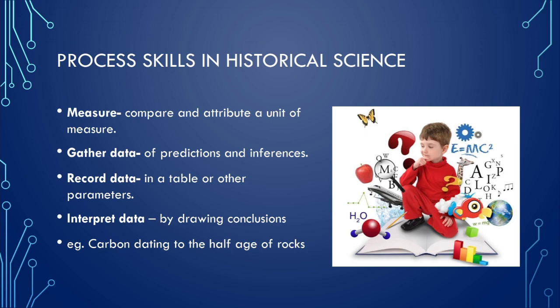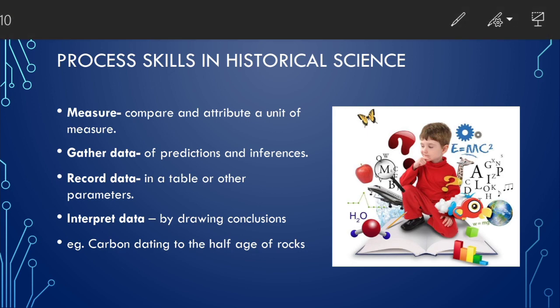Next set of skills used in historical science are measuring, gathering data, recording the data and interpreting the data and coming out with a conclusion. So here if you want to know years of a rock, what method we use? We use carbon dating method. Remember carbon dating method uses the half years of deteriorating carbon isotope present in the rock and it will give us an idea about how many years it has been there.